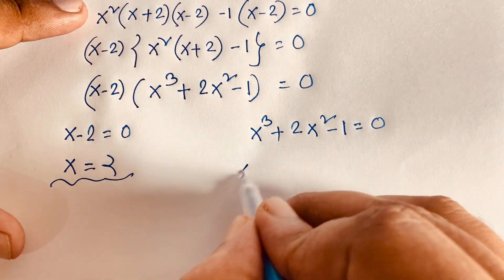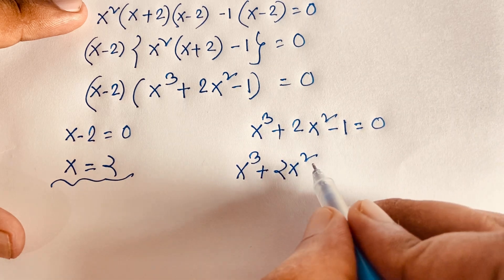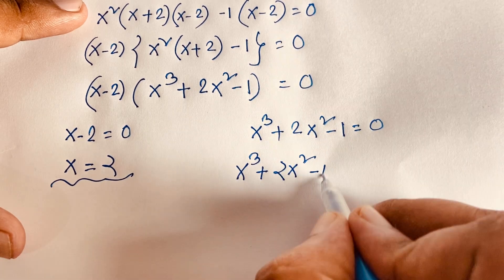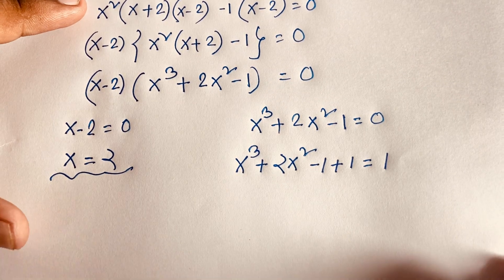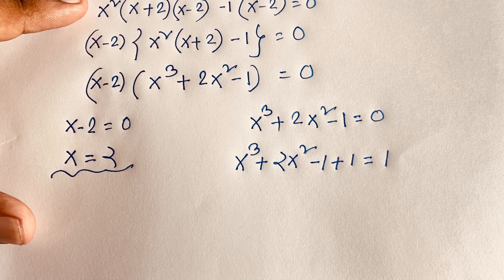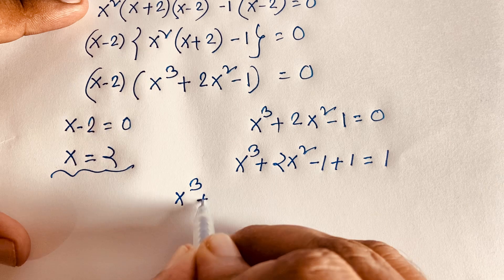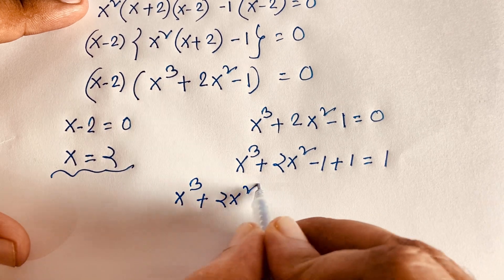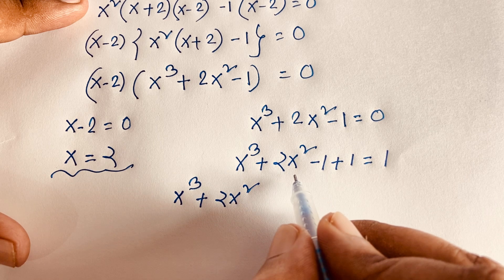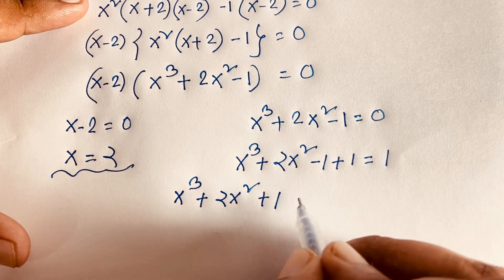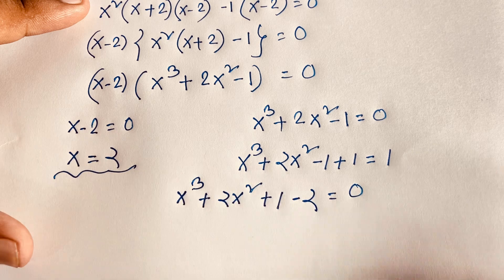Looking at x³ + 2x² - 1, we add and subtract 1: x³ + 2x² + 1 - 1 - 1 = 0. Moving the extra -1 to one side gives us x³ + 2x² - 2 = 0, which we can split to help with factoring.